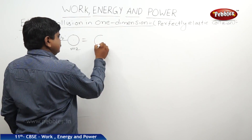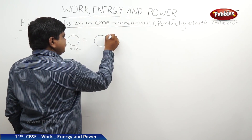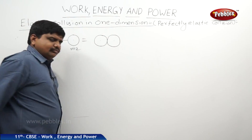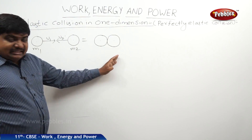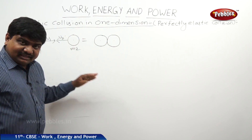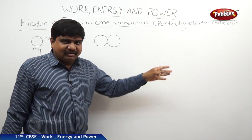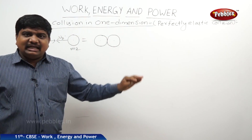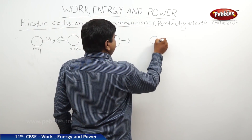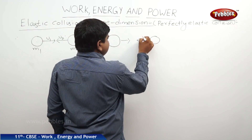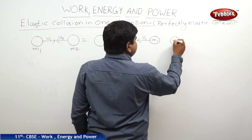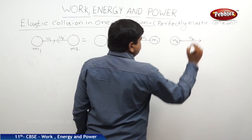The collision takes place. After the collision, they both will separate because it is an elastic collision — they will regain their state and move with different velocities in the same path but in the opposite direction. After the collision, m1 will move with velocity v1 and m2 will move with velocity v2.